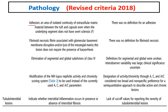Adhesion is now defined as an area of isolated continuity of extracellular matrix material between the tuft and capsule — previously undefined. Fibrinoid necrosis is defined as fibrin associated with glomerular basement membrane disruption and/or lysis of the mesangial matrix.